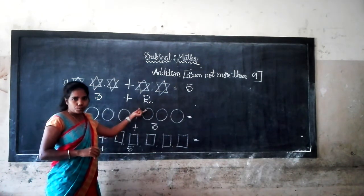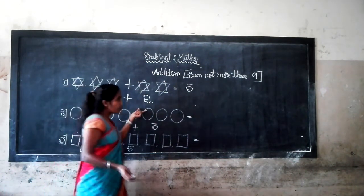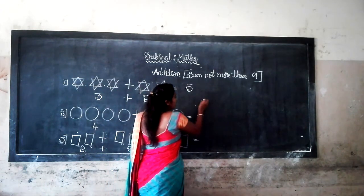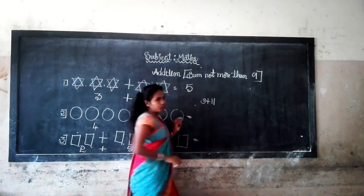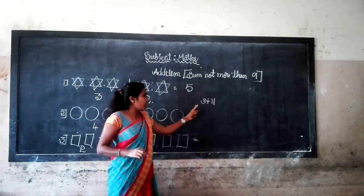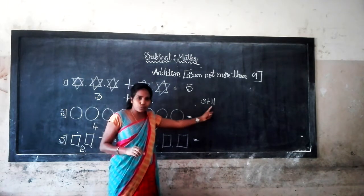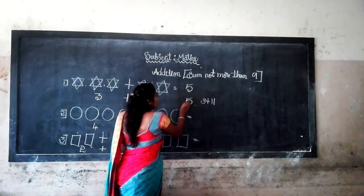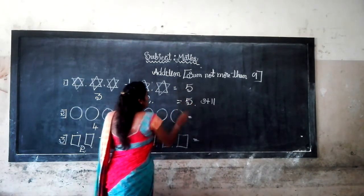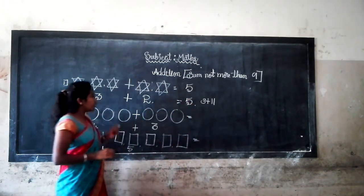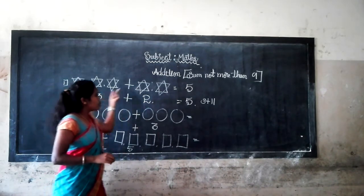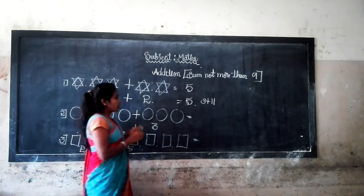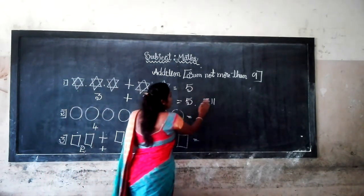Then three plus two. Yes, three plus two also — three plus two. Three after number four, after number four is five. Yes, three plus two equals five. So three plus two is five.